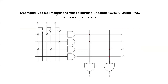Let us see one example to understand PAL. Implement the following boolean functions using PAL. Two boolean functions are given in the form of sum of products. If the given boolean functions are in minterm numbers form, you first have to write the equivalent sum of products form, then start the PAL structure. Here they are already given in sum of products form. A and B are the outputs of the PAL, so two OR gates are required. The input variables are X, Y, Z. The AND array is programmable, so inputs are available in both normal and complement form. We take X, Y, Z in normal form with straight lines, and through NOT gates we get X', Y', Z'.